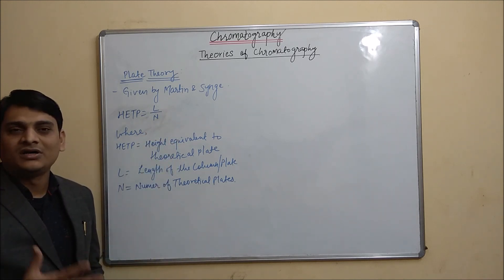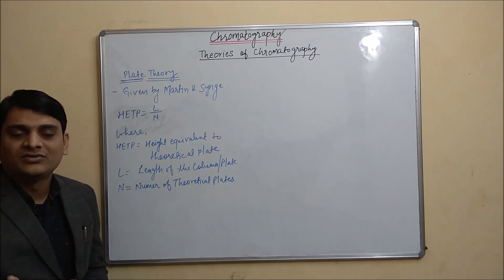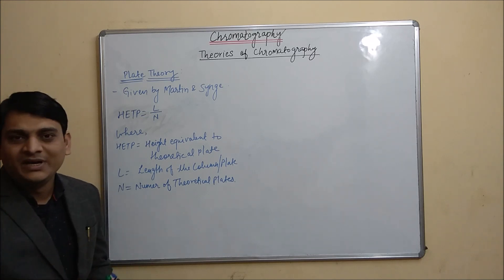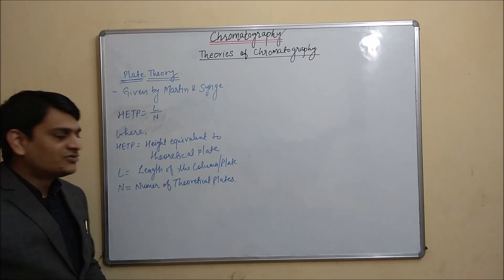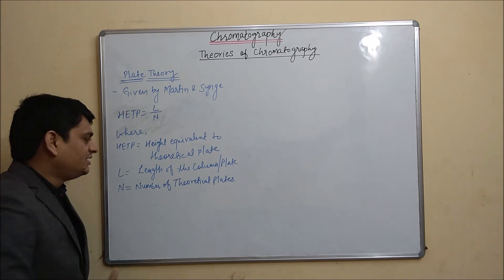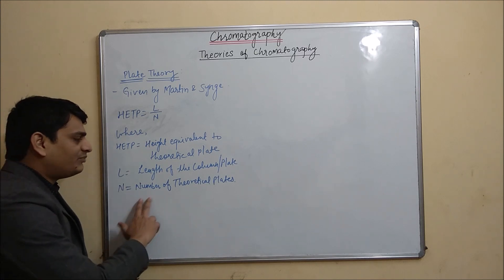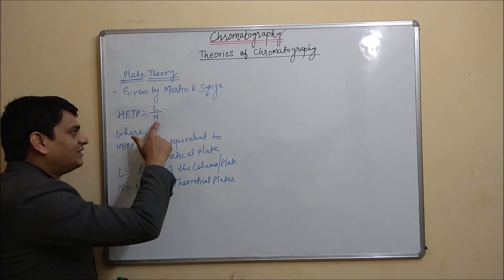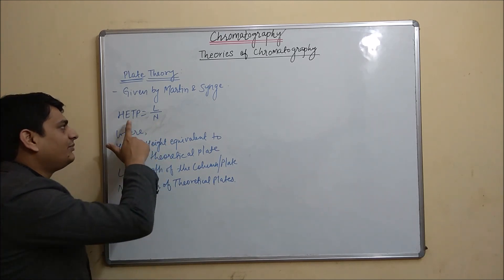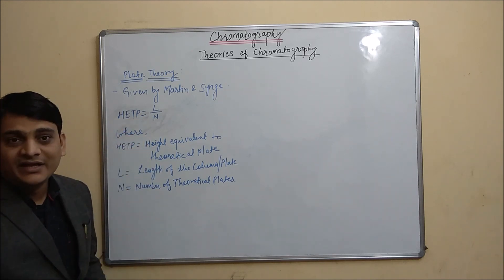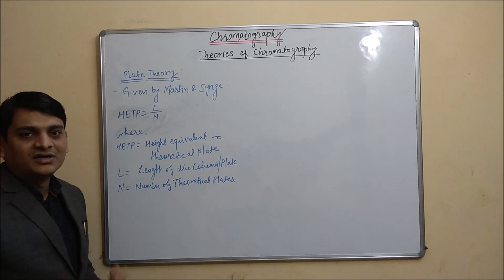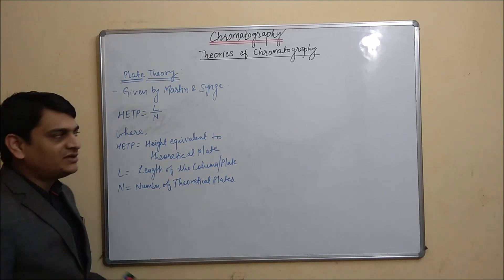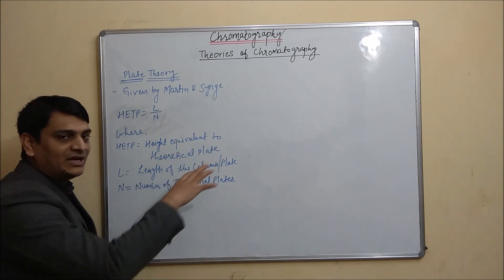L is the length of the column or plate, and during chromatographic technique we cannot increase or decrease the length of the column — it will be constant. So the variable here is N, the number of theoretical plates. If the number of theoretical plates is higher, then the HETP value will be lower and separation will be better for our analyte.